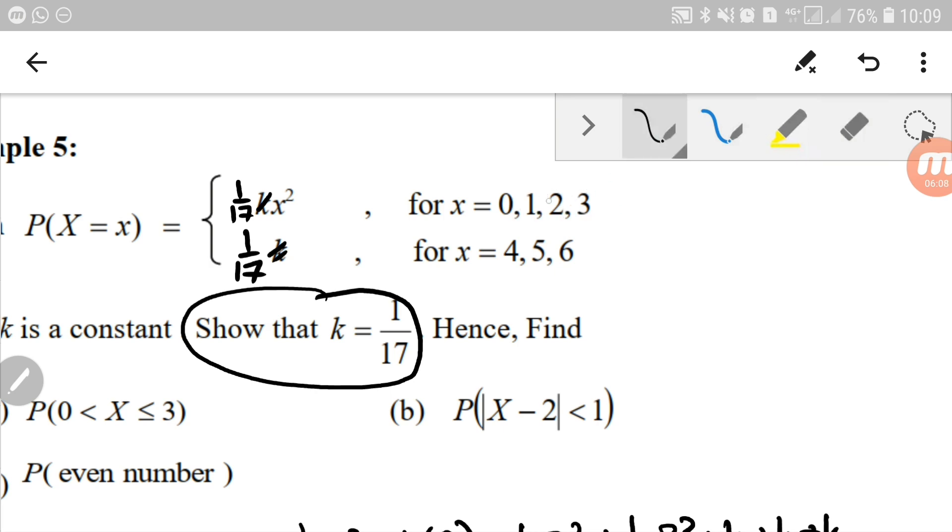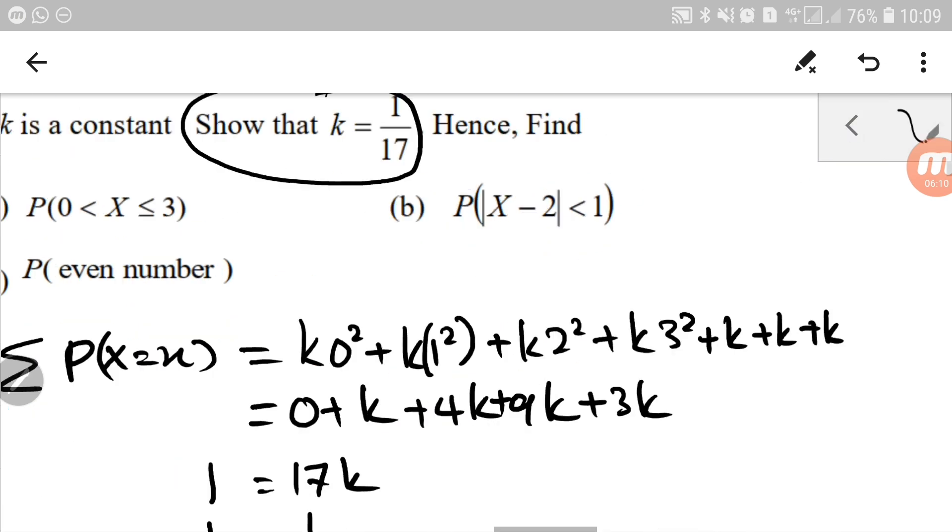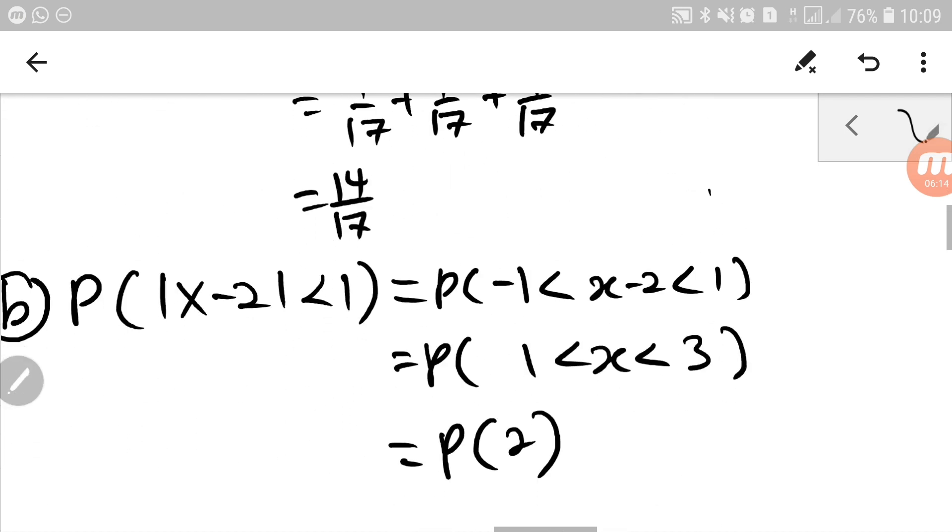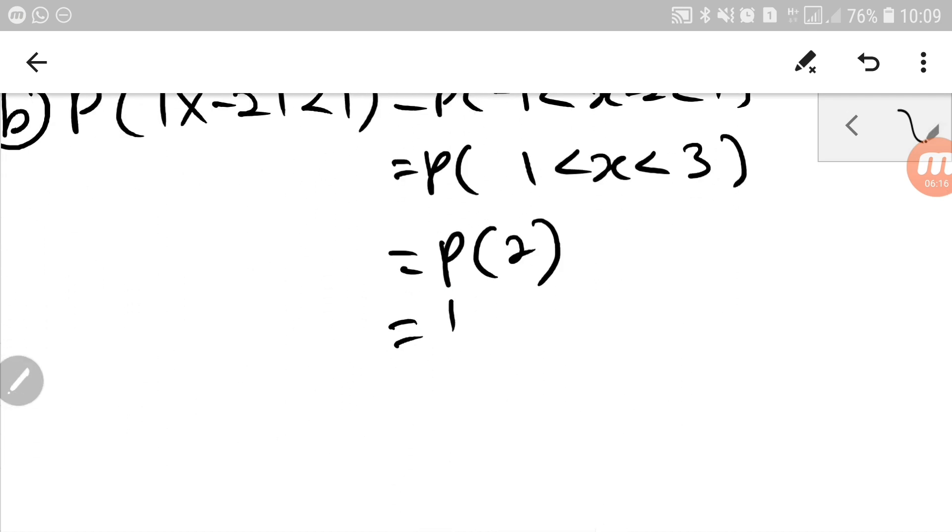For x equals 2, it's simply probability of x equals 2. Therefore, 1 over 17, 2 square, 4 over 17.